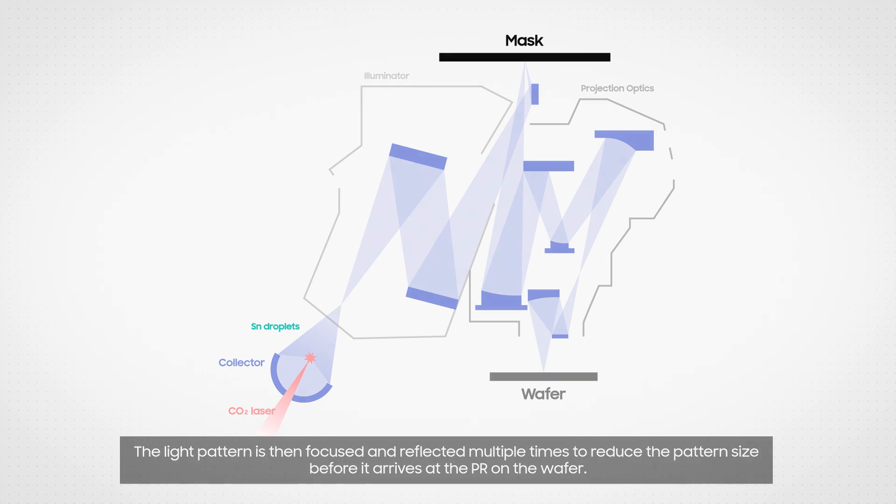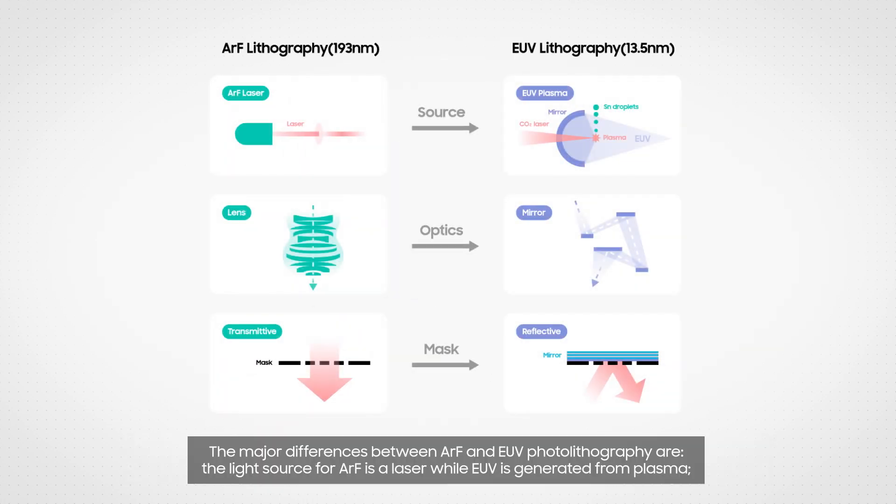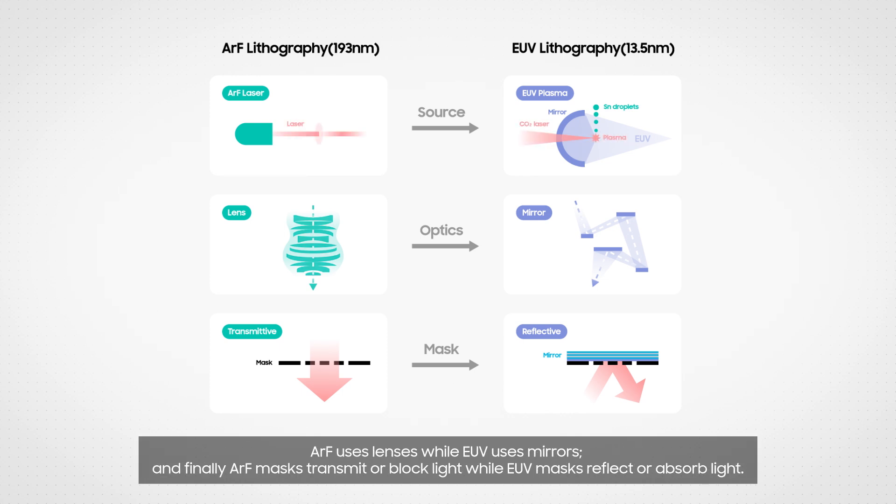The major differences between ArF and EUV photolithography: The light source for ArF is a laser while EUV is generated from plasma. ArF uses lenses while EUV uses mirrors. And finally, ArF masks transmit or block light while EUV masks reflect or absorb light.